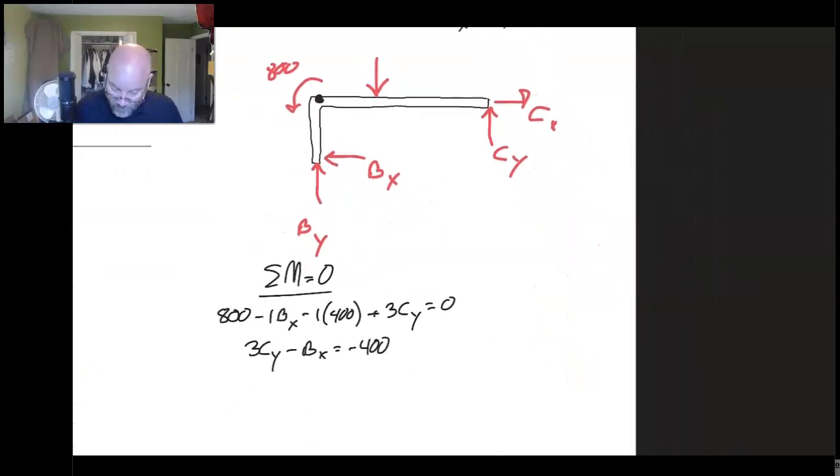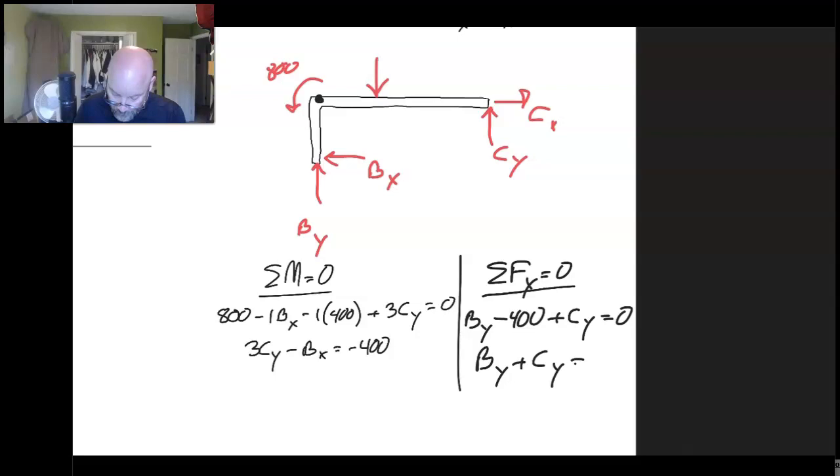Now let's think about the vertical forces. Let me draw a line here. Vertically I've got BY up, got the 400 down, and I've got CY up equals zero. Now if I rearrange this just a little bit to make it look prettier, there we go. So this piece has taken us as far as we can.